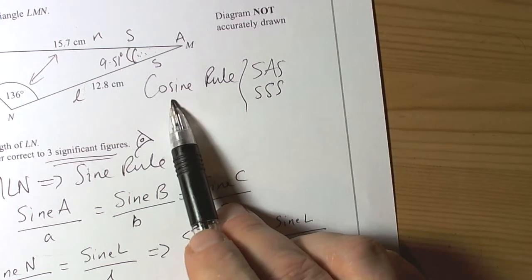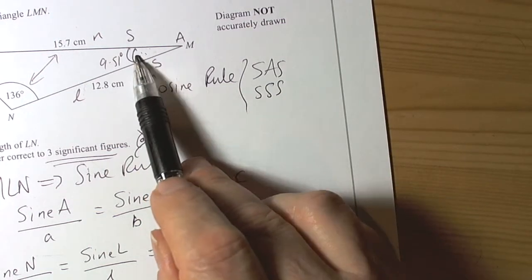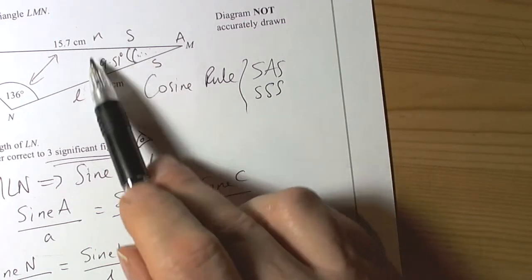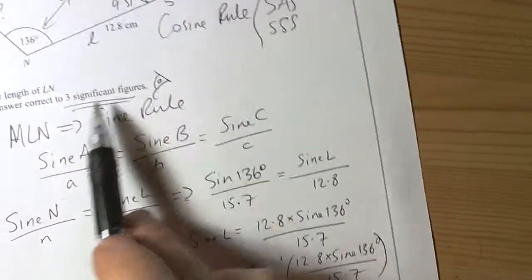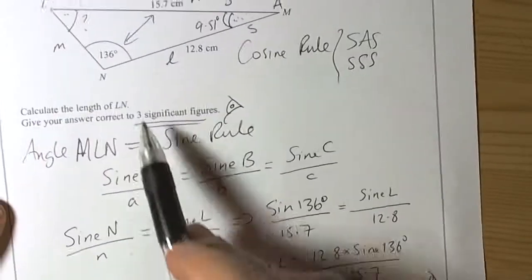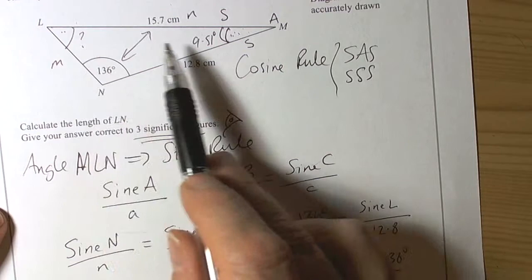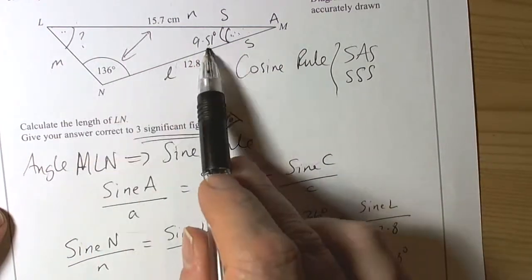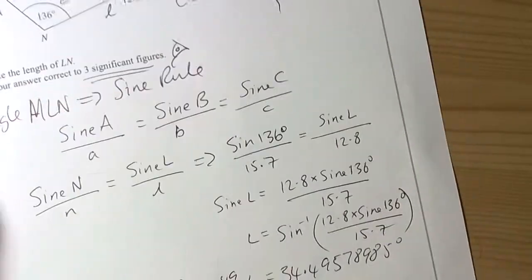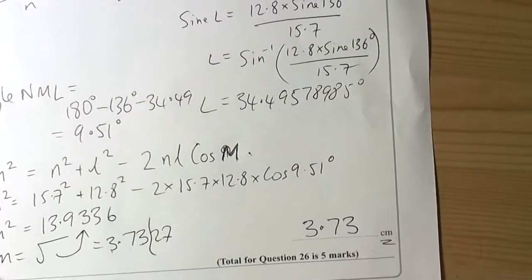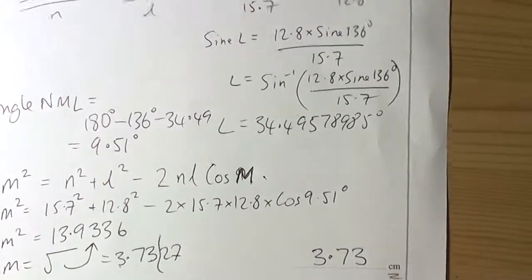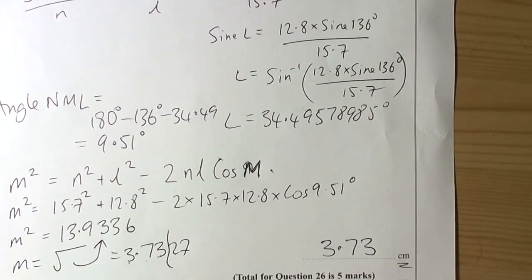So it's quite a long question because it's worth five marks — you'd expect to spend about five minutes on it. We recognised that if we knew the missing angle, we'd have a side-angle-side triangle, so the aim was to get that angle. Using the sine rule, we found one angle, which then allowed us through angles-in-a-triangle to get the other one, and then we could use the cosine rule to work out the final answer.